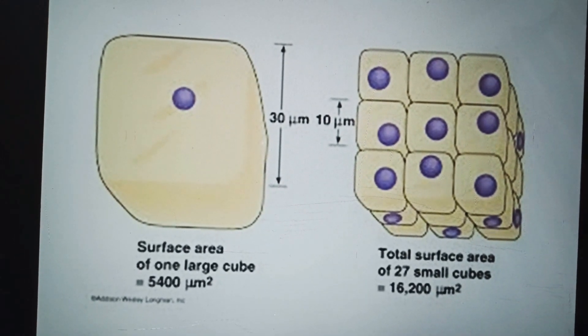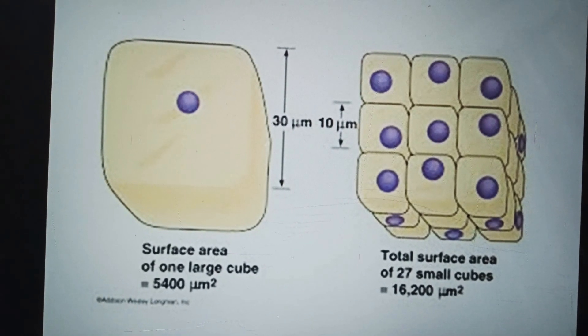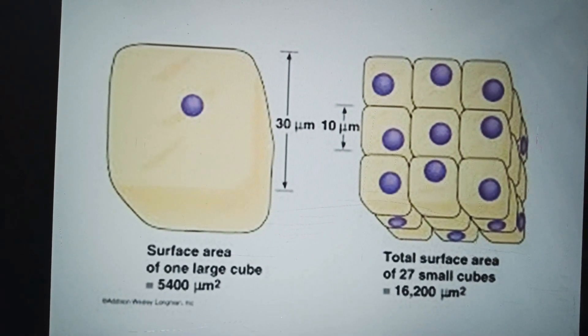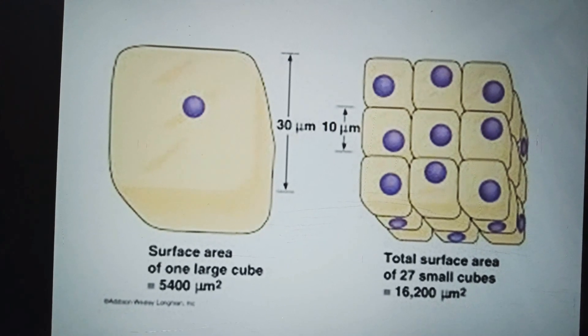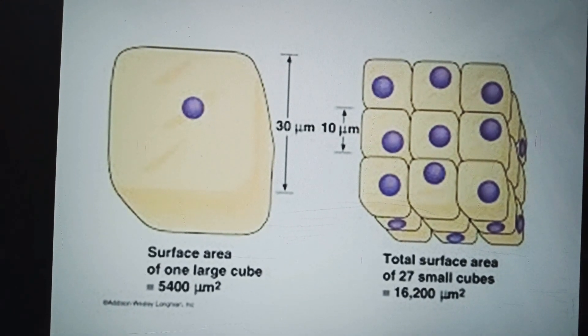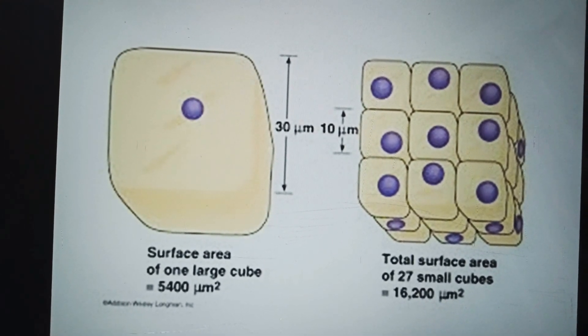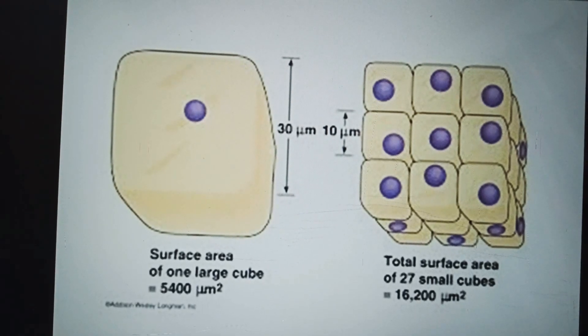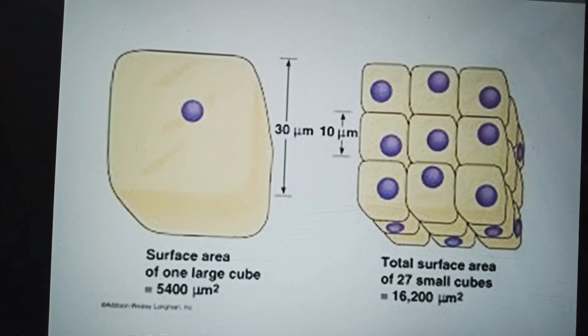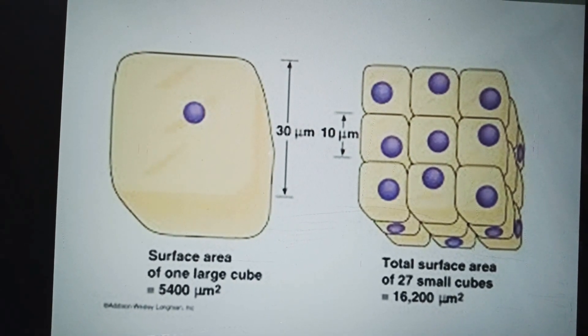The smallest cells are bacteria called mycoplasmas with the diameter between 0.2 micrometer to 1.0 micrometer. The bulkiest cells are bird eggs and the longer cells are some muscle cells and nerve cells.